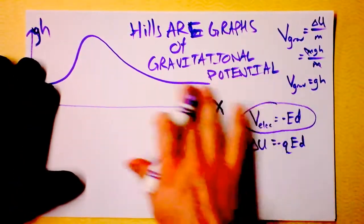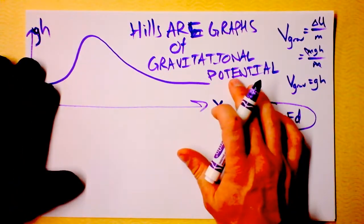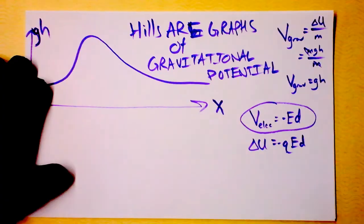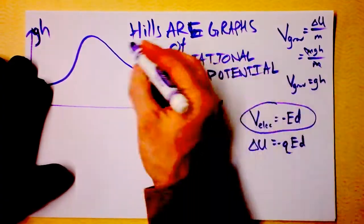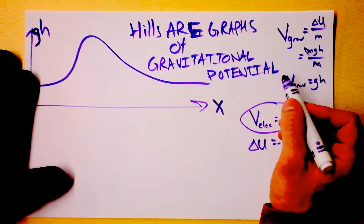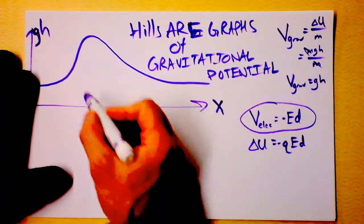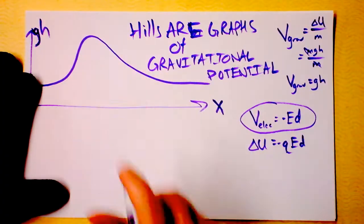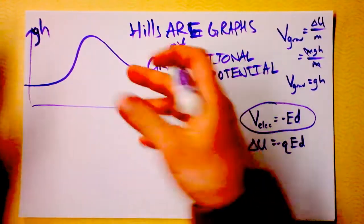So if you believe that hills are graphs of gravitational potential, then I could show you a topographical map for this same hill.